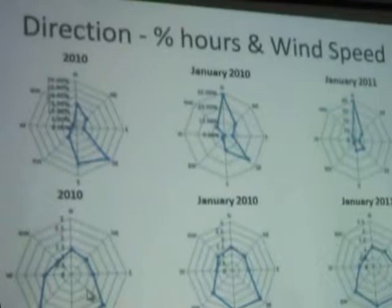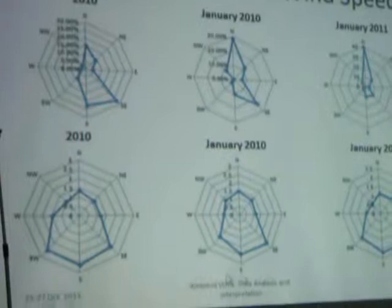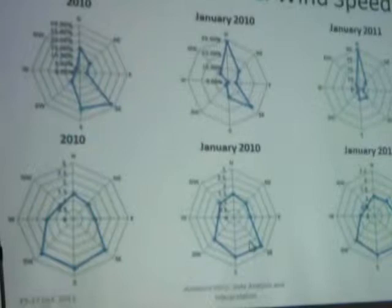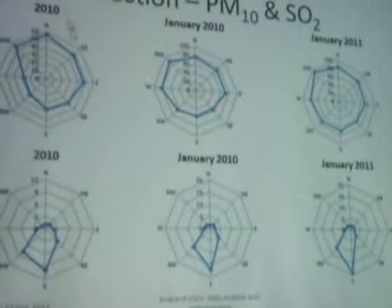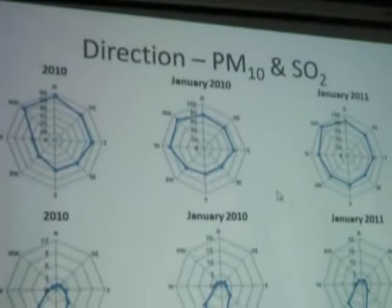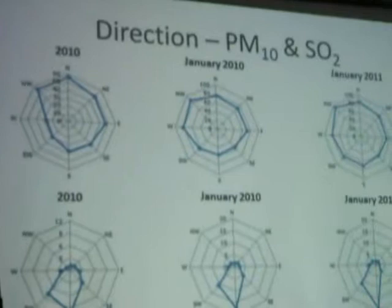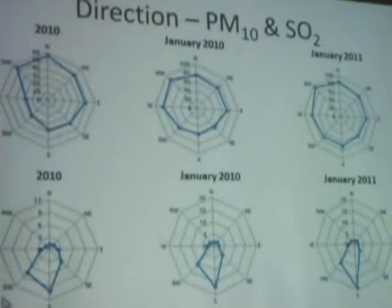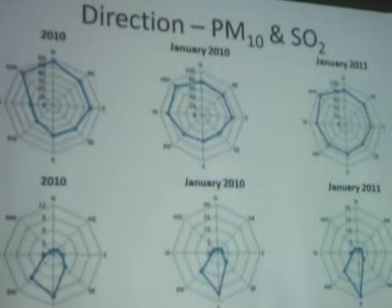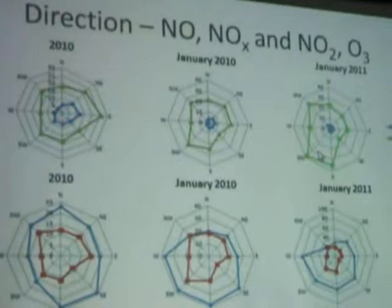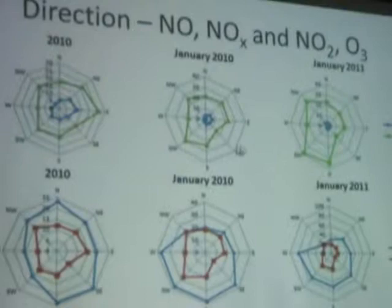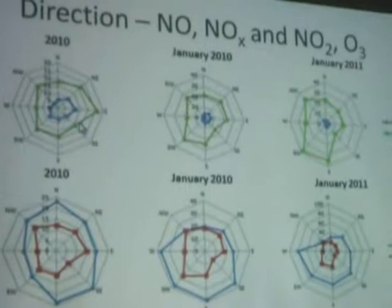Wind speed tends to be higher from the south, in the southern direction, throughout the year and in the individual months. PM10 doesn't show much wind direction dependence. SO2 certainly shows very, very strong wind direction dependence — much higher concentrations from the south and southwest. This tells us, as one already knows, there are two sources to the southwest. NOx does not show a very strong dependence on wind direction most of the time.